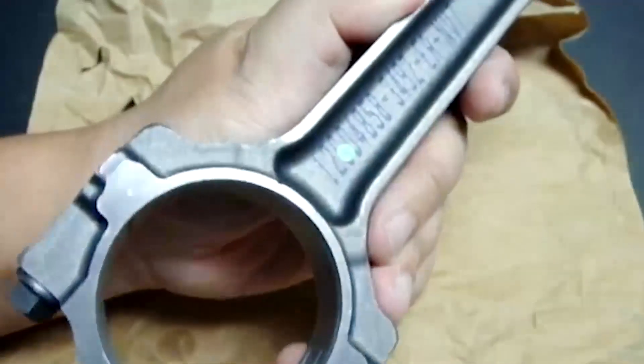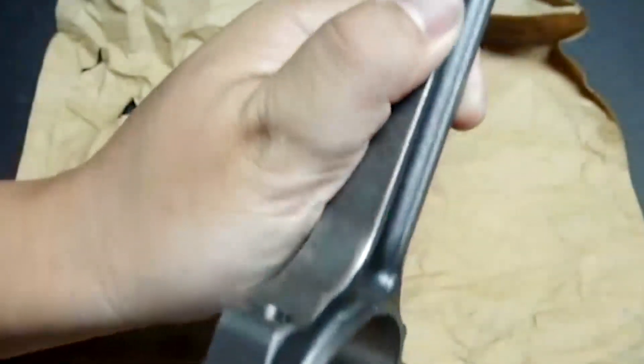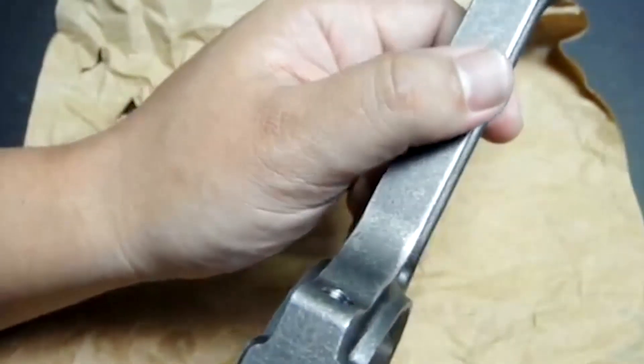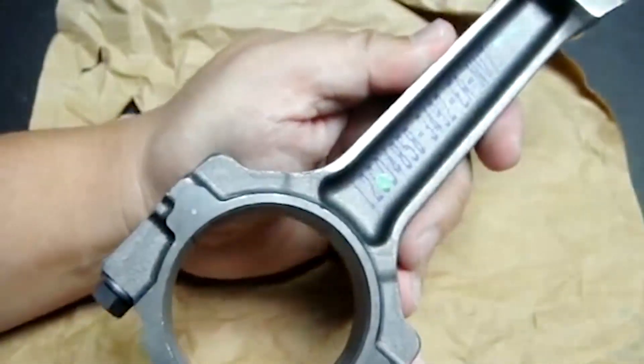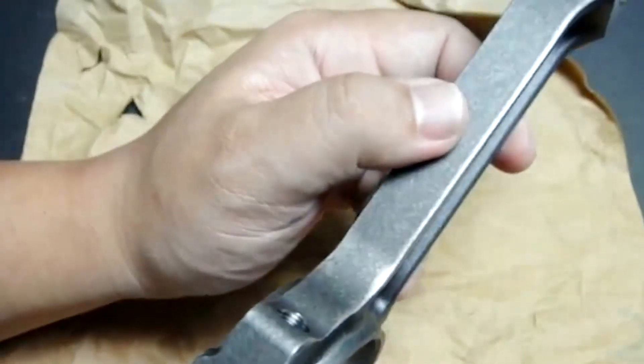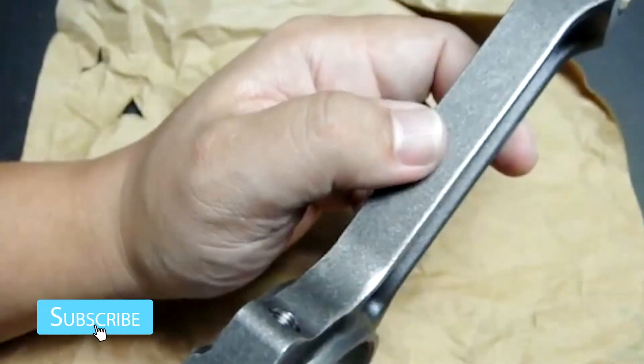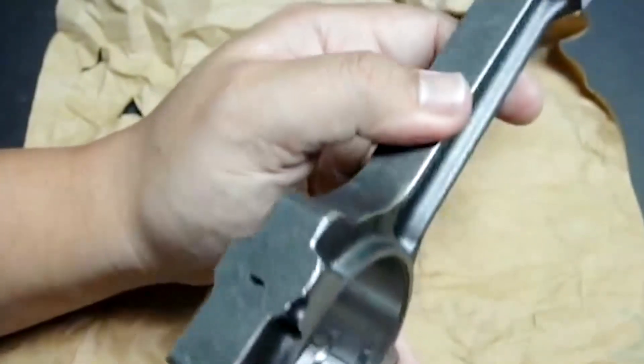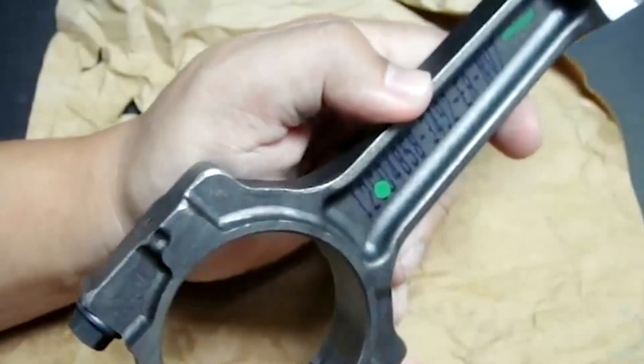A little more on the LSA connecting rod is that the LSA engine and its connecting rods are meant to see supercharged application. For example, in the Cadillac CTS-V, the LSA is tuned to create 550 horsepower out of that power plant. In the Chevrolet Camaro ZL1, the LSA power plant is tuned to create 580 horsepower.